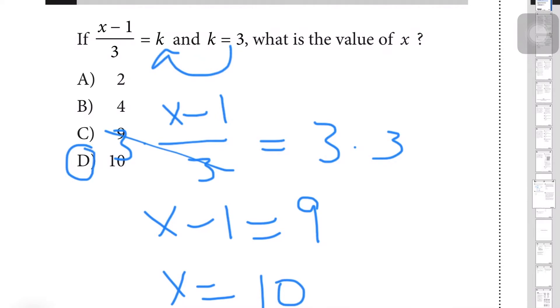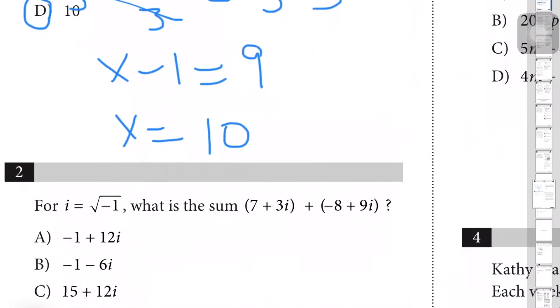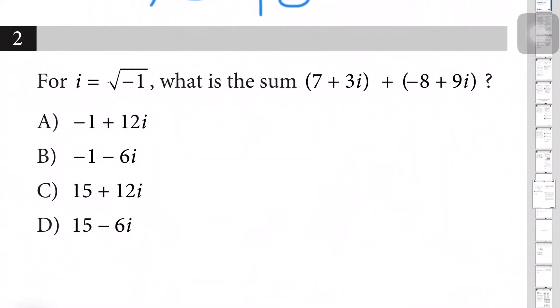Next question: for i = √(-1), what is the sum of (7 + 3i) + (-8 + 9i)? The first thing I would suggest for this question is to remove the brackets. For the first one it stays the same, it also stays the same for the second one because it's just a plus, so -8 + 9i.